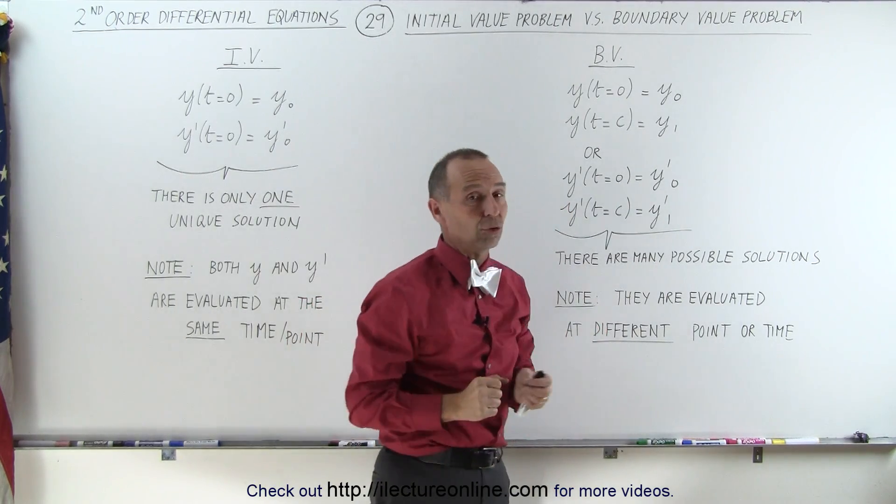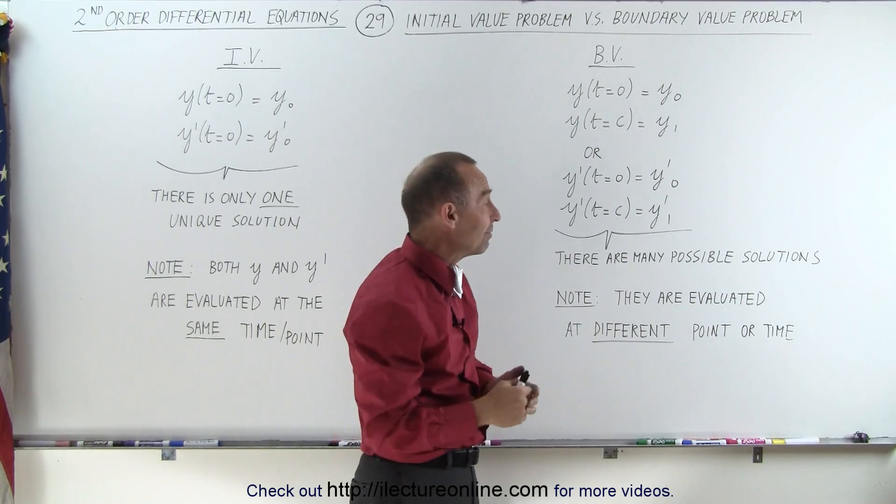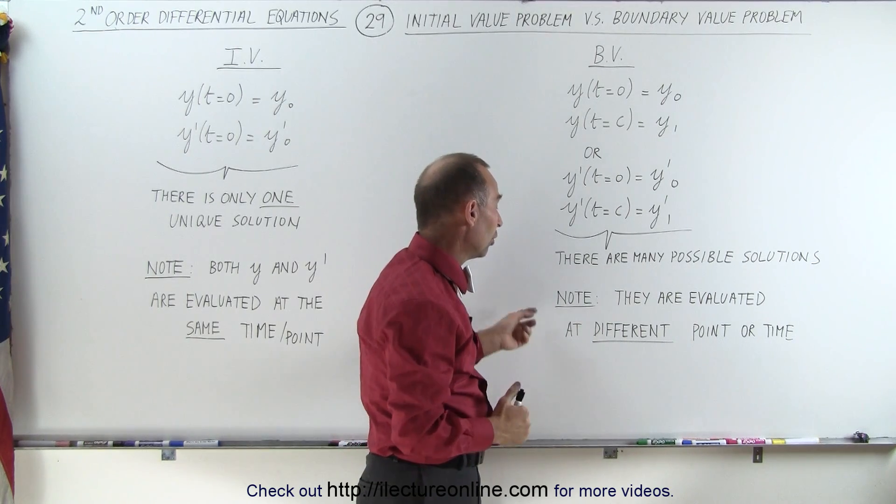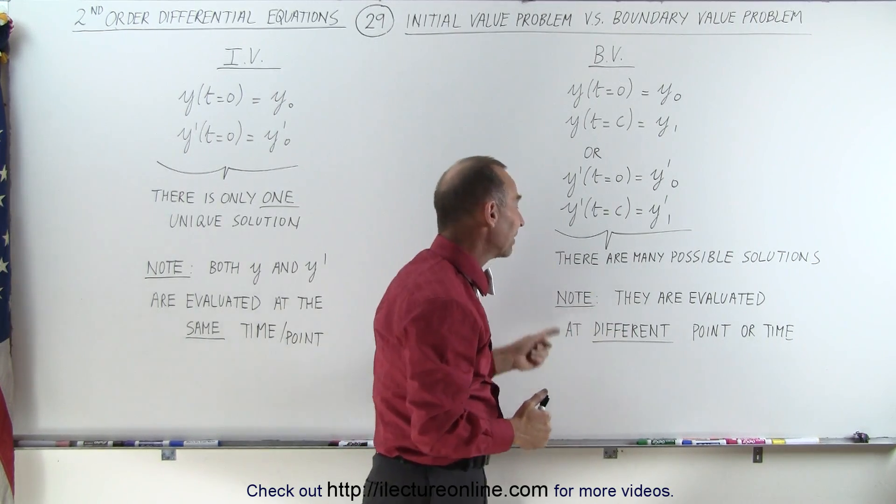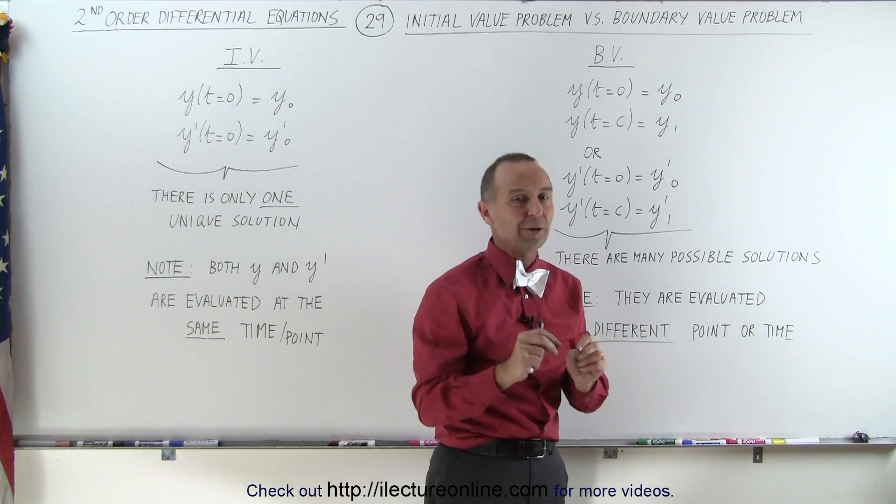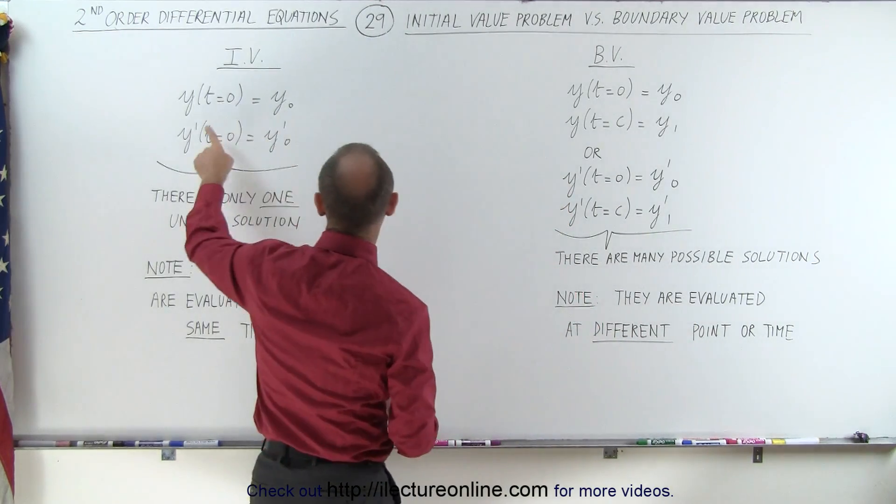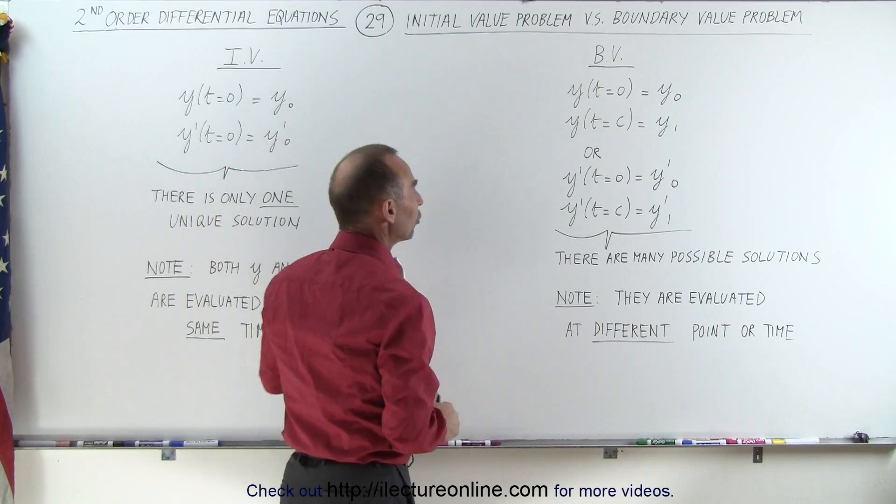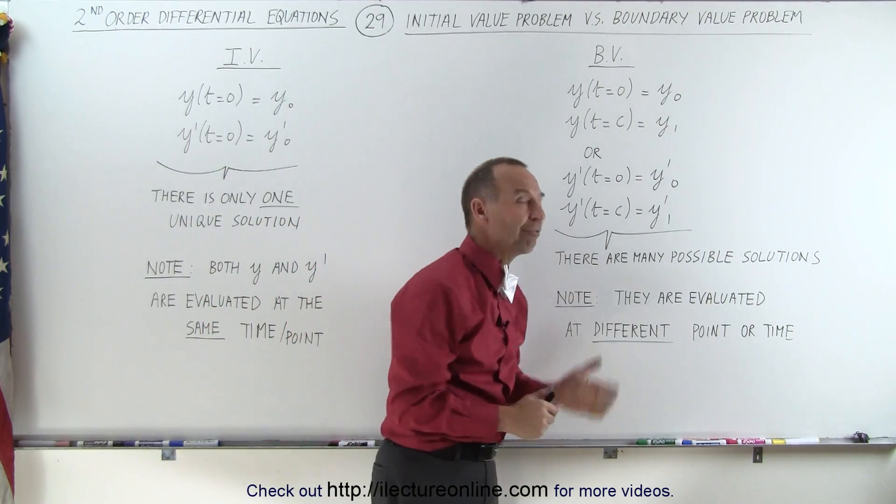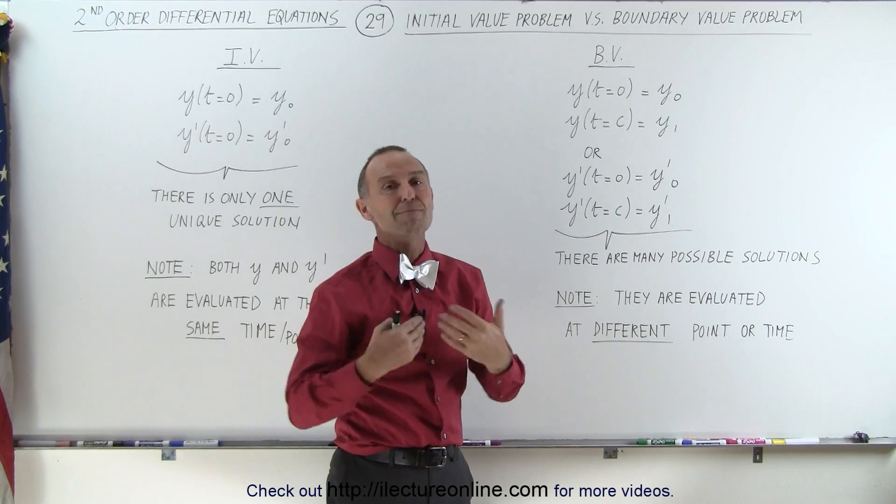In that case, there could be many possible solutions. And in some instances, even an infinite number of solutions. Note they're evaluated at different points or at different times. And therefore, they're not initial value problems that give you a unique solution. It's what we call a boundary value problem that can give you many solutions.